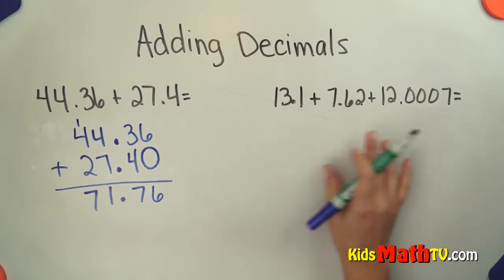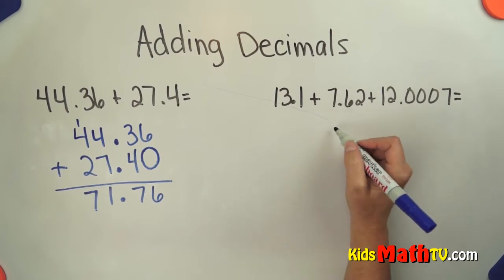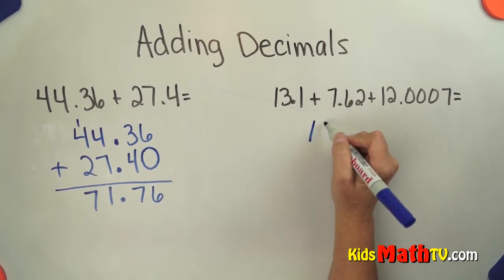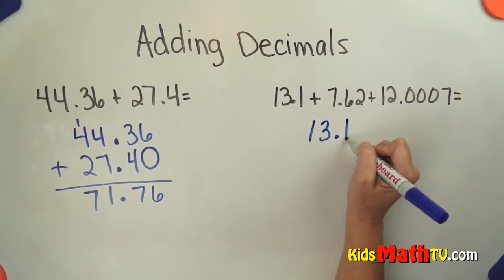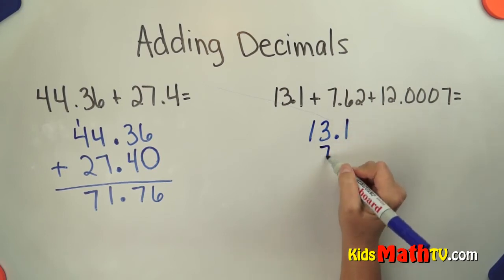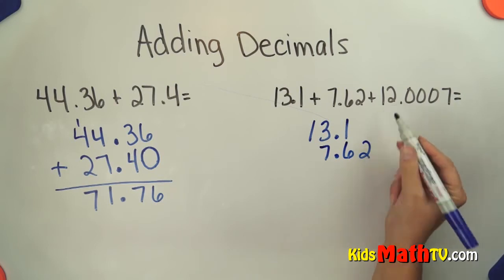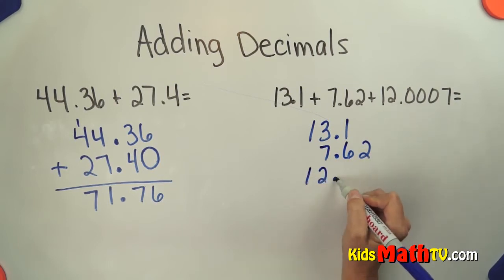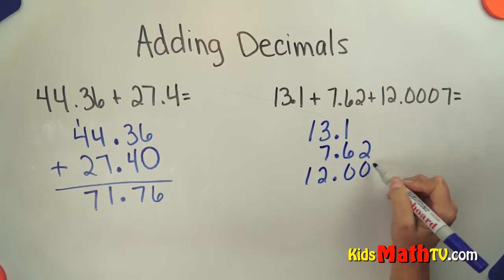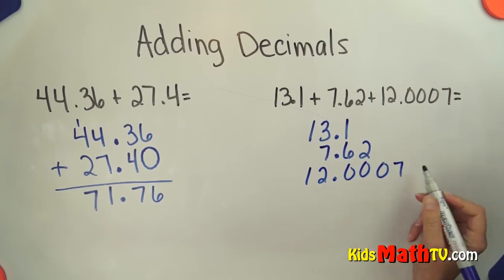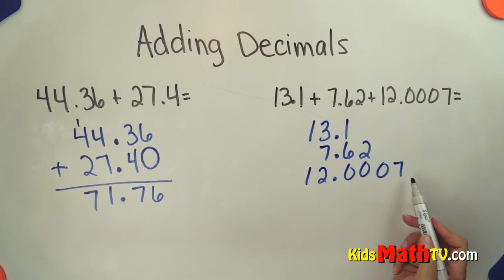Here we have some more decimals with different decimal places as well. What we need to remember is to line up our decimals. So 13 and 1 tenths, then we have 7 and 62 hundredths. This one is really tricky. 12 and 1, 2, 3 zeros and a 7. So that's 7 tenths, hundredths, thousandths, ten thousandths. 7 ten thousandths.